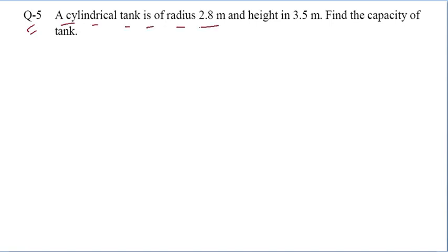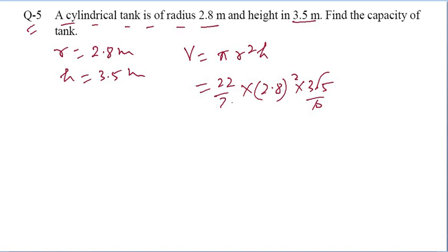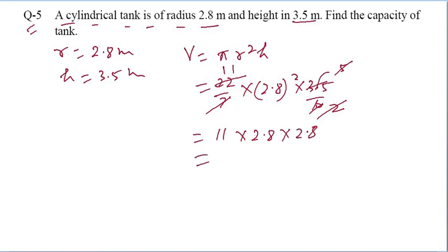Last question: A cylindrical tank has radius 2.8 m and height 3.5 m. Find the capacity. Volume = 22/7 × 2.8² × 3.5. Simplifying: 11 × 2.8 × 2.8 = 86.24 m³. That is your answer.